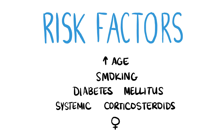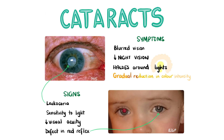Risk factors for developing cataracts include increasing age, smoking, diabetes mellitus, systemic corticosteroids, or female gender. A patient may experience symptoms such as blurred vision, reduced night vision, halos around lights, and a gradual reduction of colour intensity. On examination there may be a white pupil, known as leukocoria, seen on general inspection and with the ophthalmoscope, sensitivity to light, reduction in visual acuity, and on ophthalmoscopy there will be a defect in the red reflex.